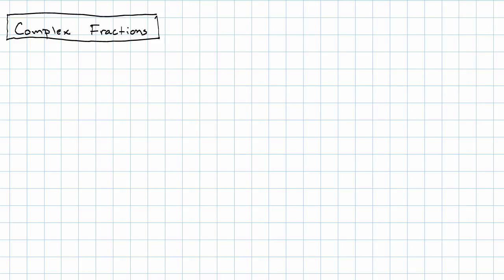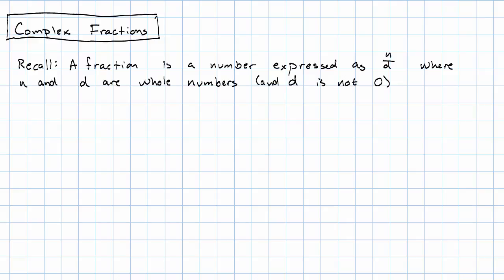Let's take a moment to talk about so-called complex fractions. Remember that a fraction had a numerator and denominator that were whole numbers. So a fraction is any number that can be expressed as numerator over denominator, where the denominator is not zero.